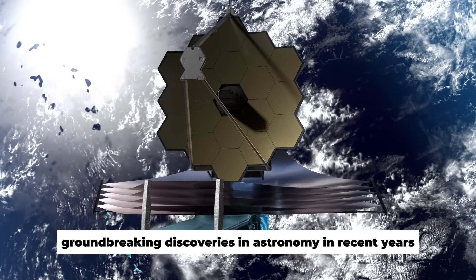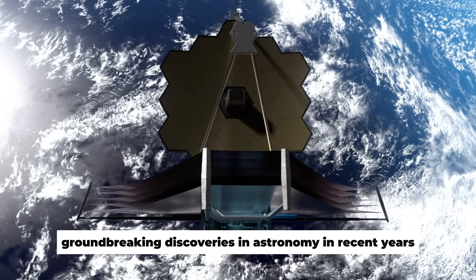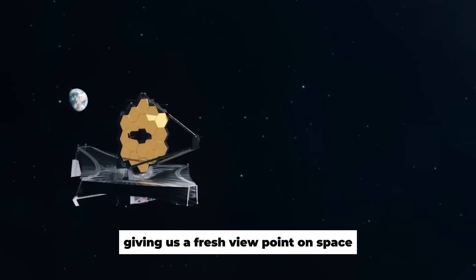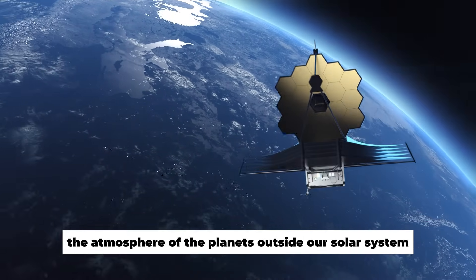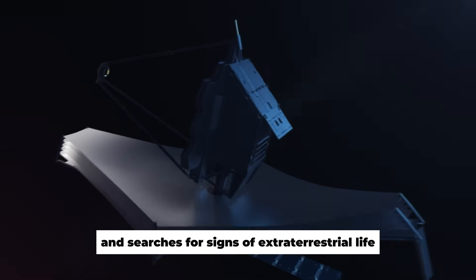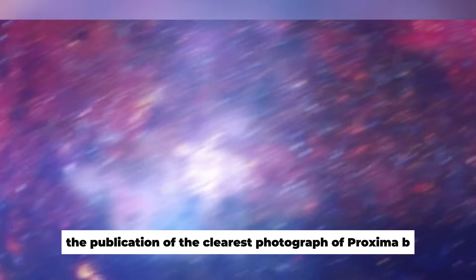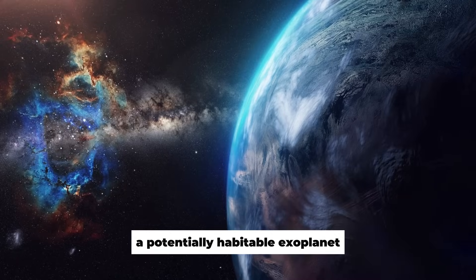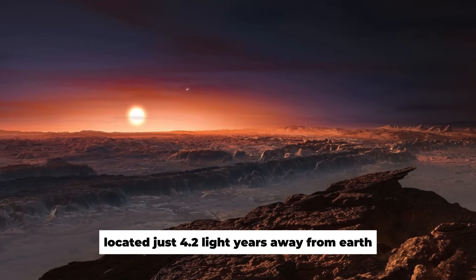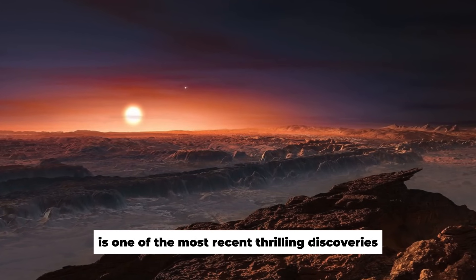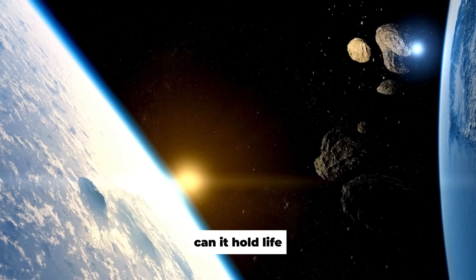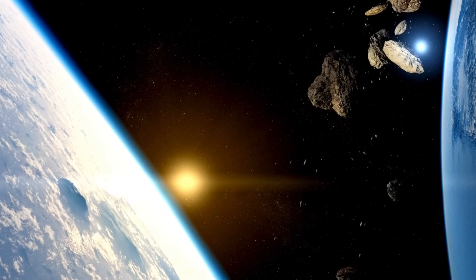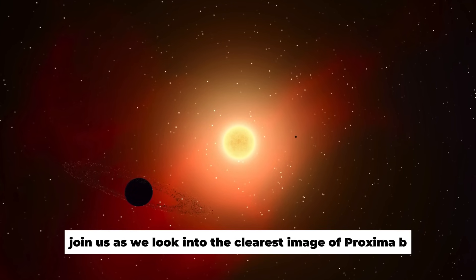The James Webb Telescope has made groundbreaking discoveries in astronomy in recent years, giving us a fresh viewpoint on space. The JWST also investigates the atmosphere of planets outside our solar system and searches for signs of extraterrestrial life. The publication of the clearest photograph of Proxima b, a potentially habitable exoplanet located just 4.2 light-years away from Earth, is one of the most recent thrilling discoveries. What secrets does this distant world hold? Can it hold life? Join us as we look into the clearest image of Proxima b released by the James Webb Space Telescope.